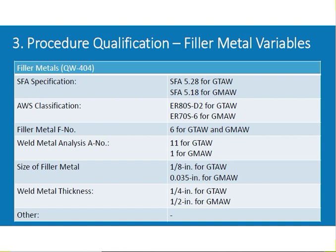SFA-5.28 for GTAW, SFA-5.18 for GMAW. AWS classification ER80S-D2 for GTAW, ER70S-6 for GMAW. Filler metal F-number is 6 for both. A-number is A-11 for GTAW and A-1 for GMAW. Size of filler metal: 1/8 inch for GTAW, 0.035 inch for GMAW. Weld metal thickness: one-quarter inch for GTAW, half inch for GMAW. These values are taken from ASME Section 9 for explanation.